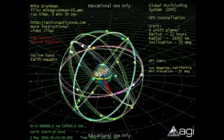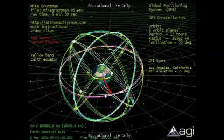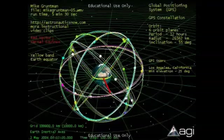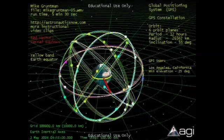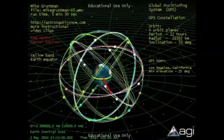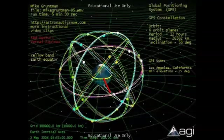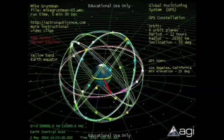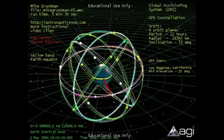This video clip describes properties of the satellite constellation for the Global Positioning System. The red vector facing you is the vernal equinox vector. The yellow band on the surface is the equator.